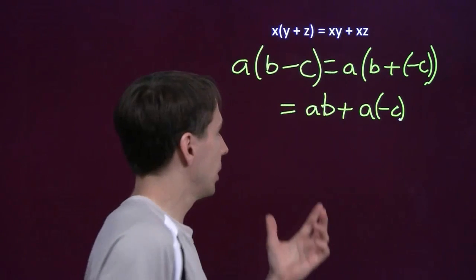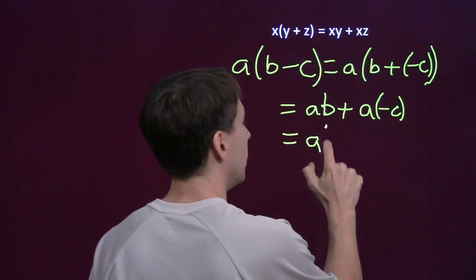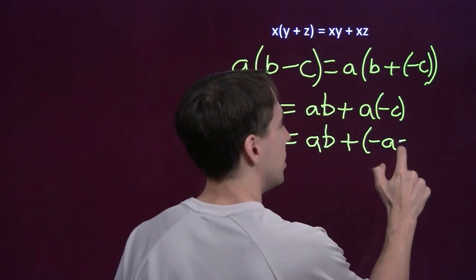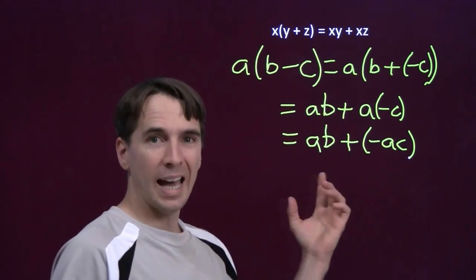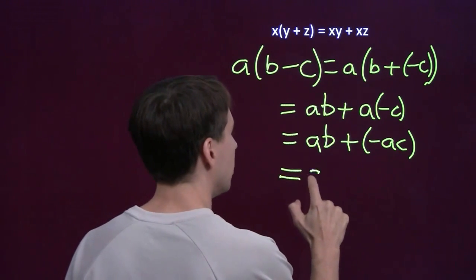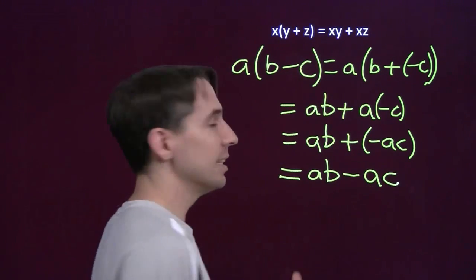So a times b, well, that's just a times b. A times the negation of c is the negation of ac. And of course, if we're adding a negation, that's just subtraction. That's what subtraction is. So that gives us ab minus ac.